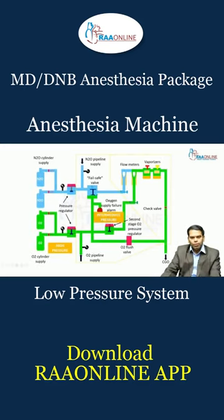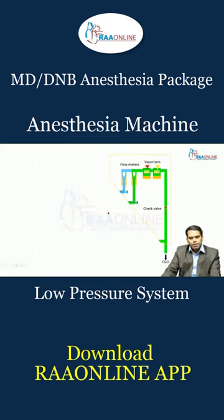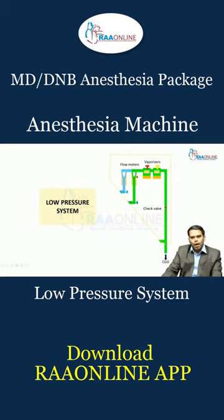Many of us know that the components of the anesthesia workstation are divided into three components: high pressure, intermediate, and low pressure system. This is based on the pressure received by each of these components. The low pressure system includes components mainly downstream to the flow control valves, and the pressure in this section will be between 14 to 26 psig.